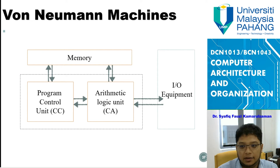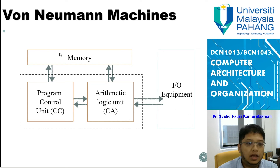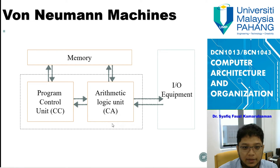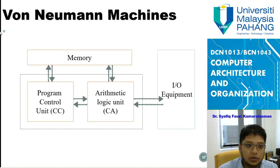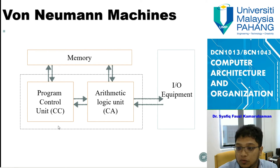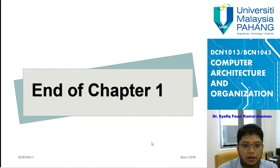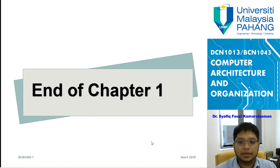The Von Neumann architecture looks like this: you have the main memory, the control unit, the ALU, and the input/output equipment. This structure represents the whole Von Neumann architecture. That is all for Chapter 1.